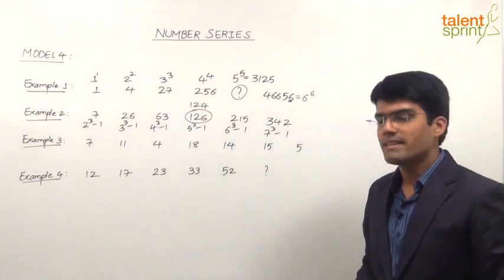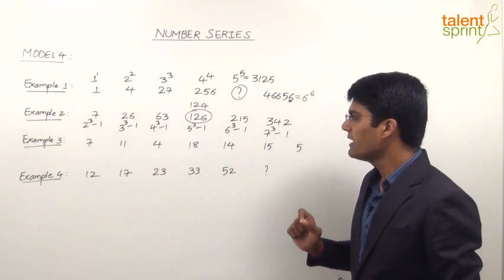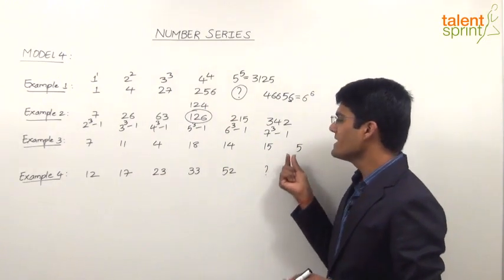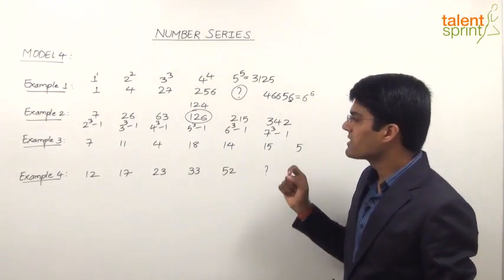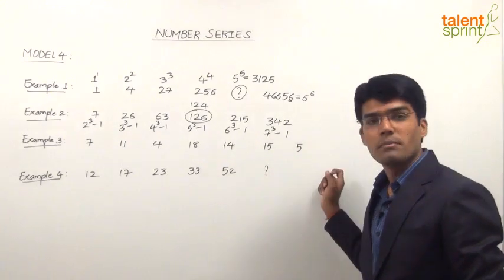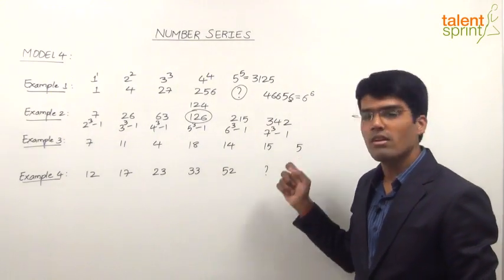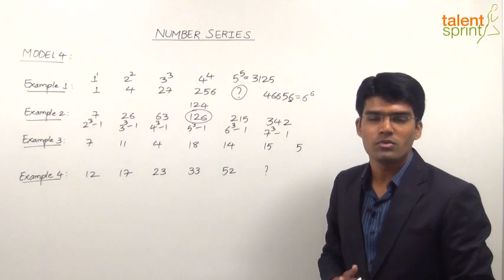Let us now look at the next example that is 7, 11, 4, 18, 14, 15 and 5. Here we are supposed to find out what is the wrong number.